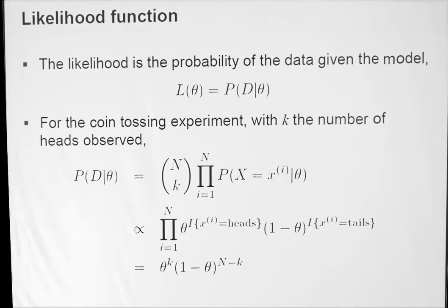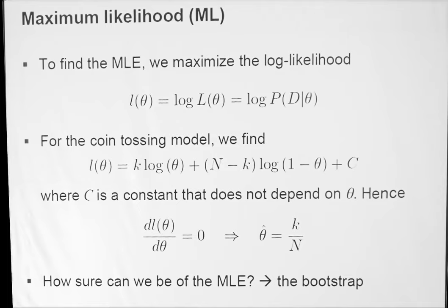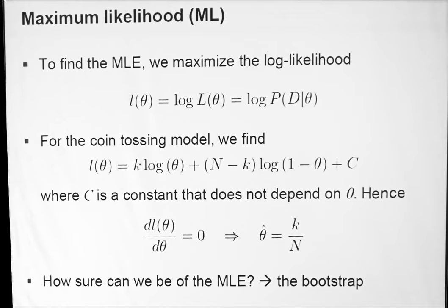The idea of maximum likelihood is to find the value of theta that maximizes the probability of the data we observe under that model. We maximize the likelihood function — but instead of maximizing directly, we compute the log likelihood, usually denoted with small l. For the coin tossing example, the log likelihood becomes K times log of theta plus N minus K times log of 1 minus theta, plus a constant from the N choose K which is not dependent on theta. If you compute the derivative over theta, set it to zero, your estimate of theta is K over N.